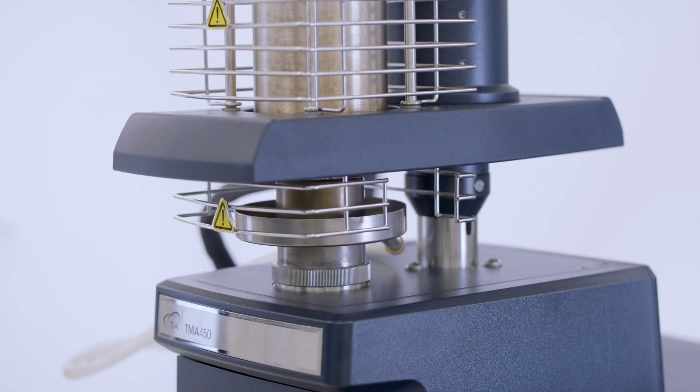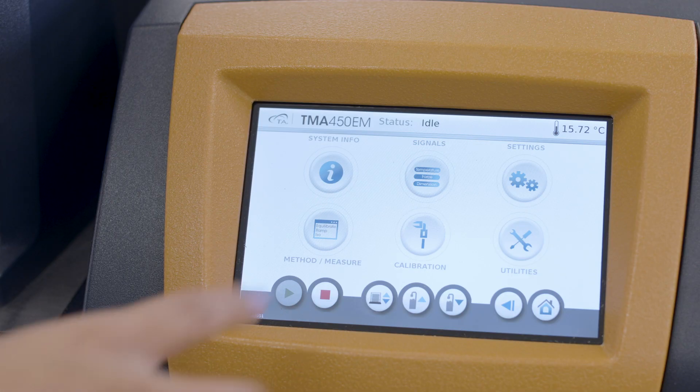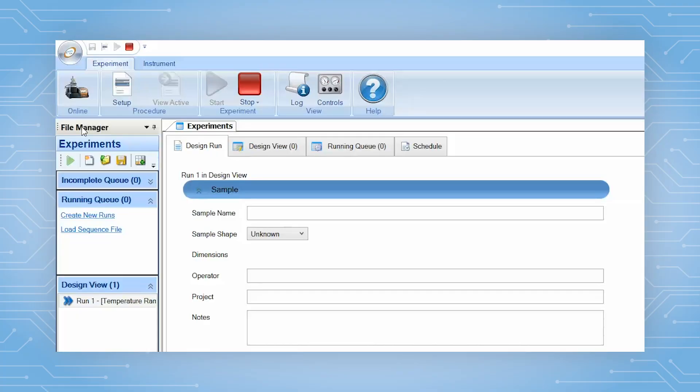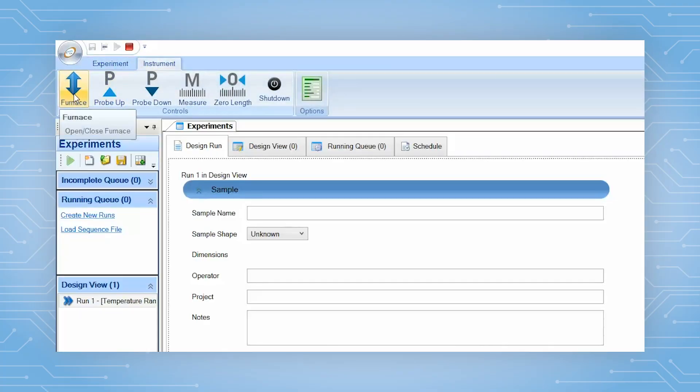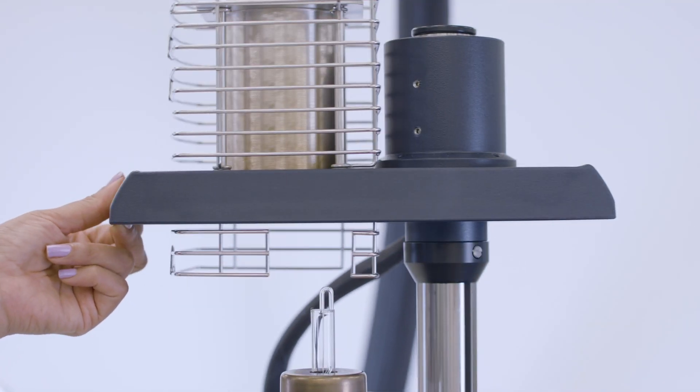To switch between probes, raise the furnace. You can do it from the instrument touchscreen or from the TRIOS software by selecting instrument and clicking on furnace. Rotate the furnace to the left to move it off to the side.